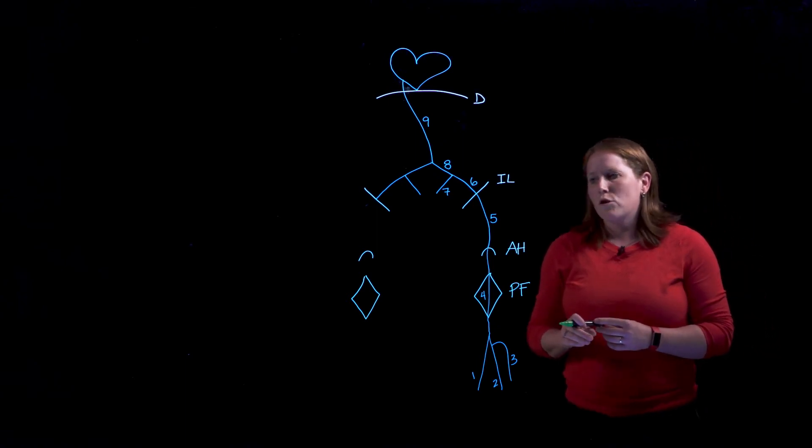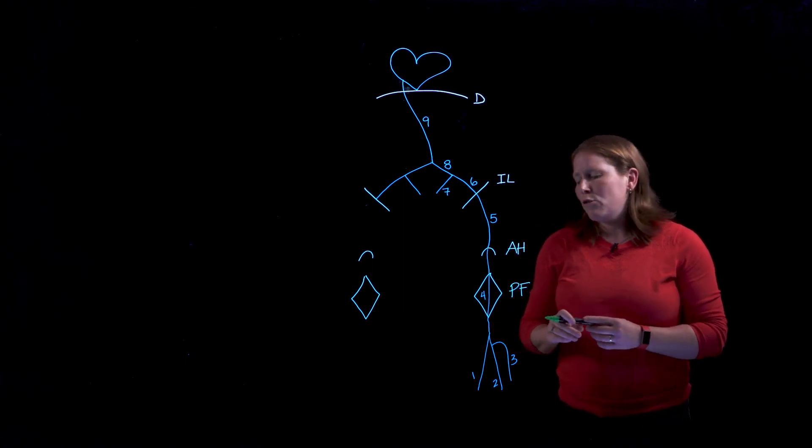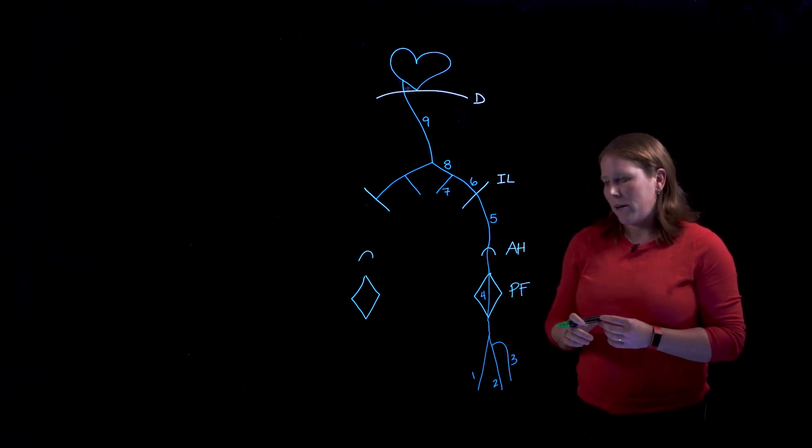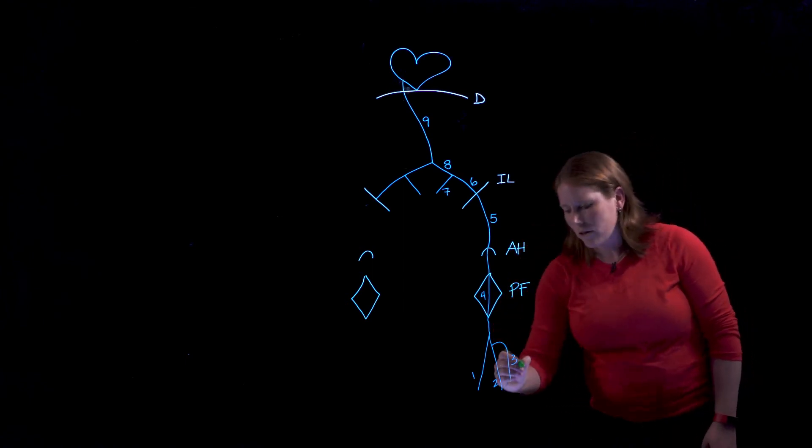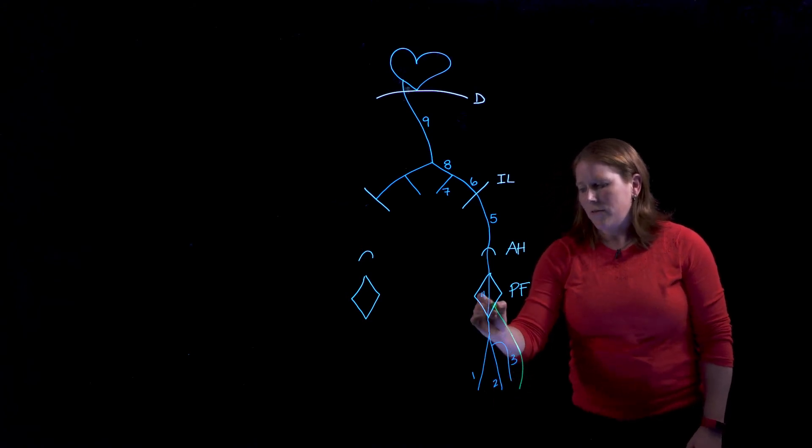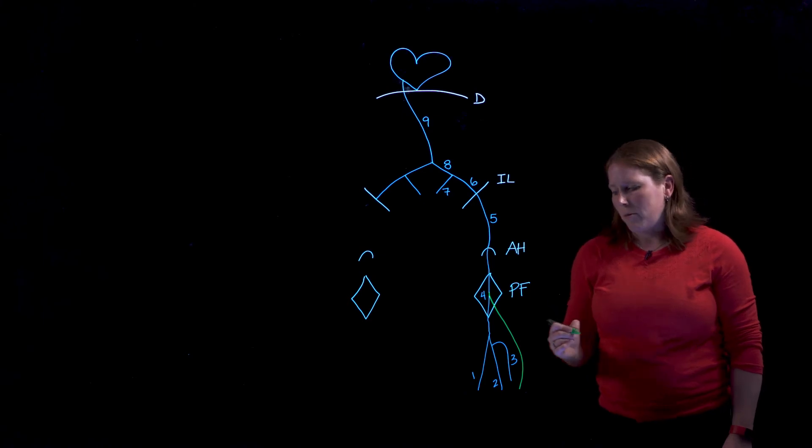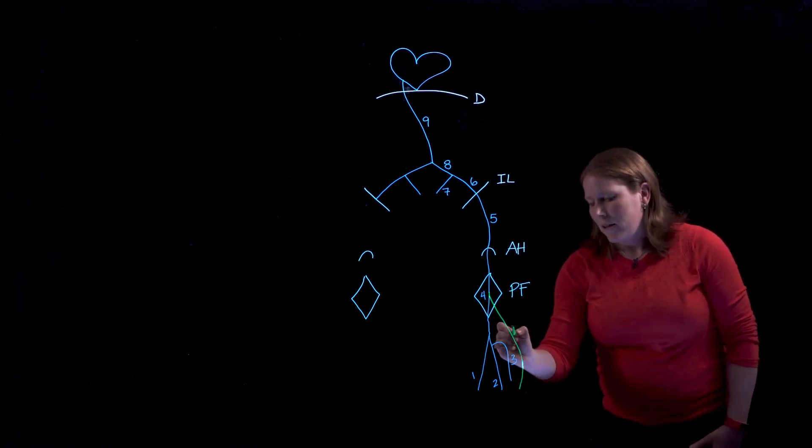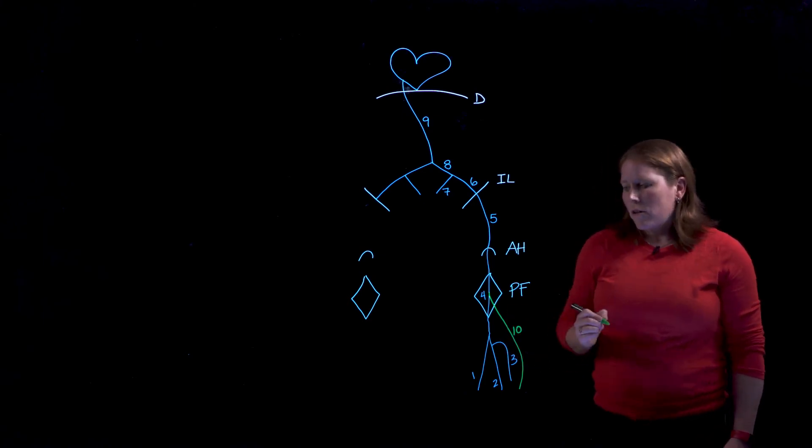We also have a set of superficial veins so there's two main superficial veins that we want you to be aware of. One that starts on the lateral side of the foot and travels up the leg just as far as the popliteal fossa where it drains into that popliteal vein. That is going to be the small saphenous vein, sometimes referred to as the lesser saphenous vein.